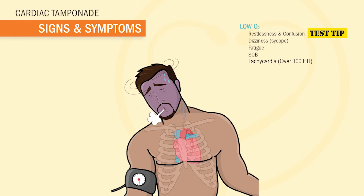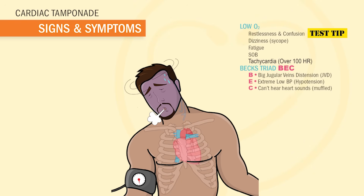Why is tachycardia the very first sign of low cardiac output? As the body starves for oxygen, the heart tries to compensate by pumping faster and faster to move its limited blood supply and oxygen around the body. In cardiac tamponade, as the heart gets squished, a condition called Beck's triad occurs. Use this helpful acronym — these are very classic signs and symptoms. The B stands for big jugular vein distension (JVD). The E stands for extremely low blood pressure, aka hypotension. And the C — you can't hear the heart sounds because they're muffled by all that fluid around the heart.